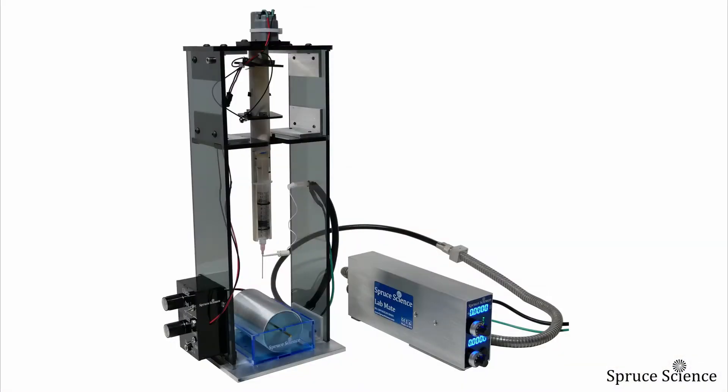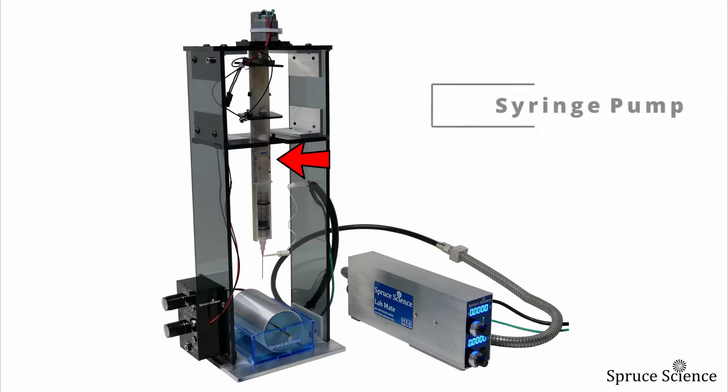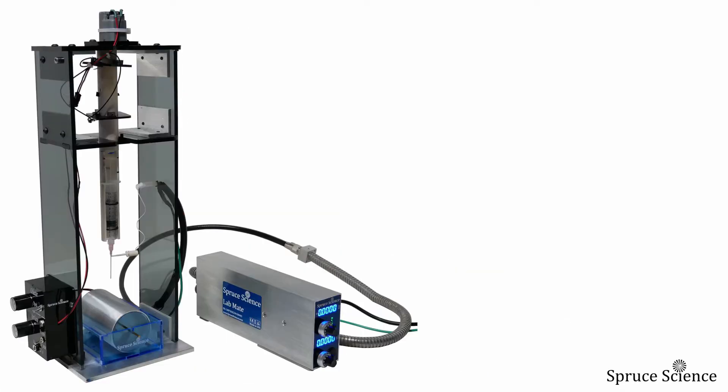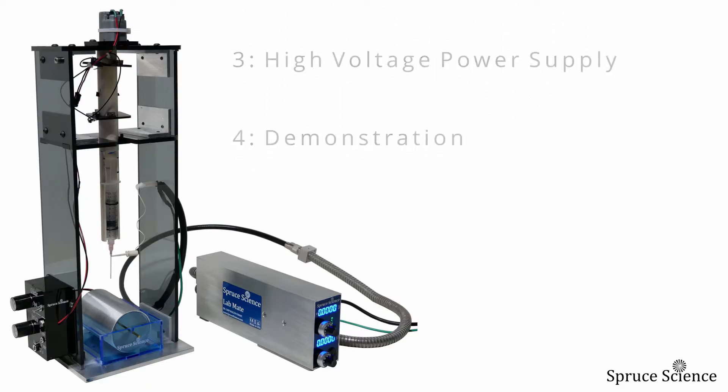The apparatus used in the electrospinning process is shown here. The hardware consists of high voltage power supply, syringe pump, and collector assembly. In the rest of the video, I will go over each sub assembly and demonstrate how the electrospinning machine operates.